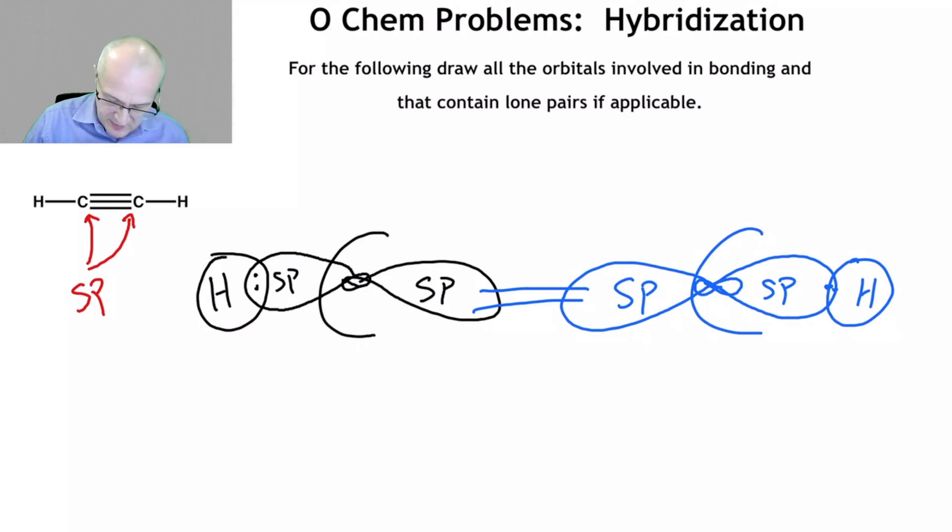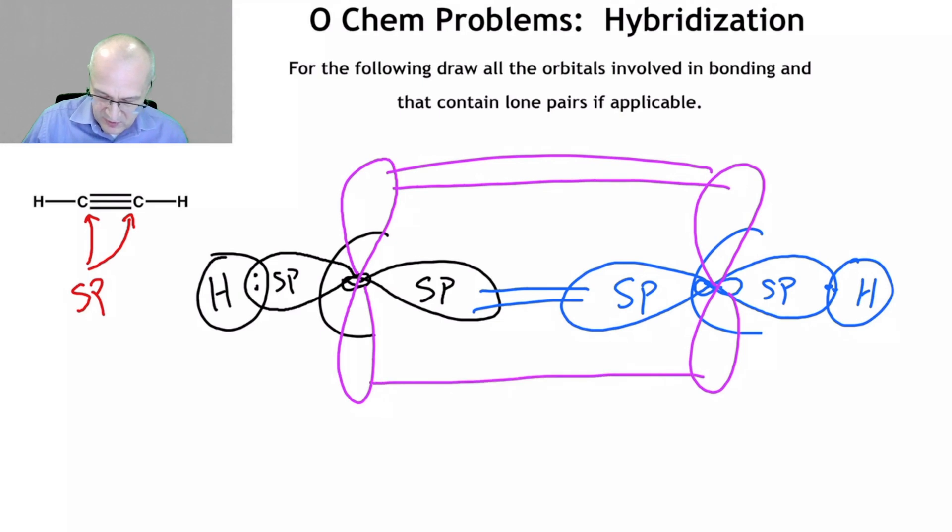What I'm going to draw next, however, is a p orbital. So there's a p orbital, and there's another one. And they are overlapping. So this is starting to look like a double bond, what we would have drawn so far for a double bond.